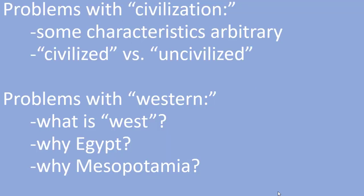However, some of those characteristics seem a bit arbitrary, like writing and an urban focus. Including those two in the definition of civilization means that cultures that did not develop writing or didn't live in towns and cities were 'uncivilized,' which is not true. There are examples of sophisticated African tribes and tribal cultures in North America that didn't develop writing. Claiming those groups were 'uncivilized' simply because they didn't write things down or live in cities misses how developed those cultures were. We've also seen in cave paintings that nomadic people were engaging in cultural pursuits.